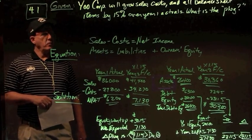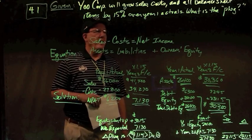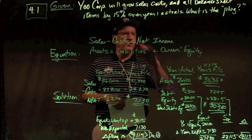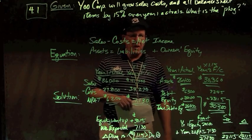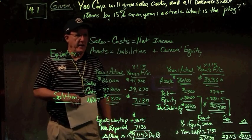In problem 4.1, we see that U Corp will grow sales costs and all balance sheet items by 15%. That's their intended goal year over year, over their year one actuals. What is the plug or what is the external financing needed in this problem?